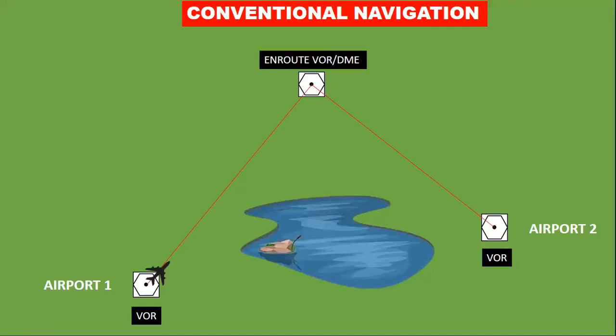Modern aviation has transformed the way aircraft navigate from one airport to another. The conventional navigation is based on ground-based aids that includes VOR and NDB, which limit the routes and procedures to their physical locations.